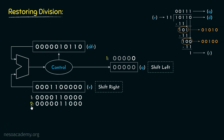During the second iteration, we shift the content of the V register towards the right one more time. The content is now 10110 in DR and 11000 in V. Since V is still greater, the subtraction between these two will result in a negative value, so we restore the content of DR. By the end of the second iteration, we shift Q left and again update the LSB with 0.